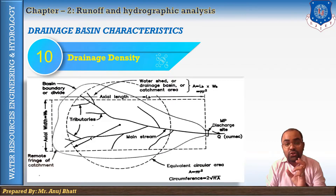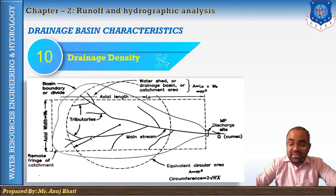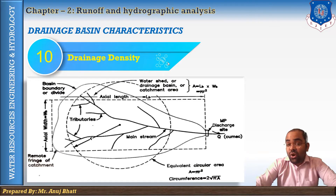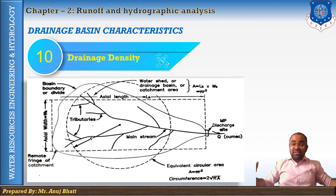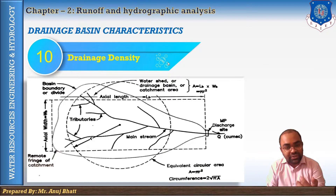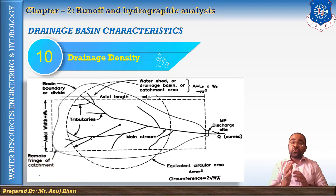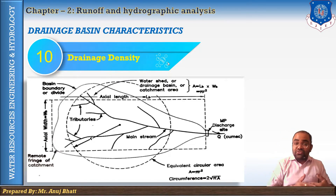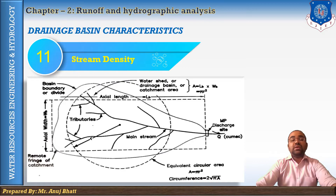The next is drainage density, expressed as the total length of streams of all orders divided by the basin area. If we consider D as drainage density, L as total length of the stream, and A as basin area, then D = L/A. Total length would be in meters or kilometers and area in square meters or square kilometers. This is a measure of closeness of spacing of stream channels. Lower drainage density indicates poor drainage.